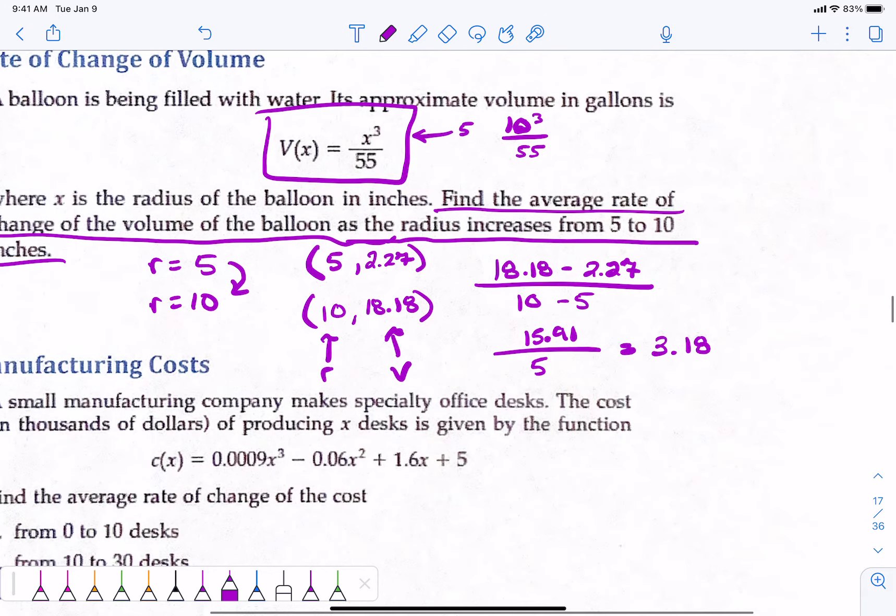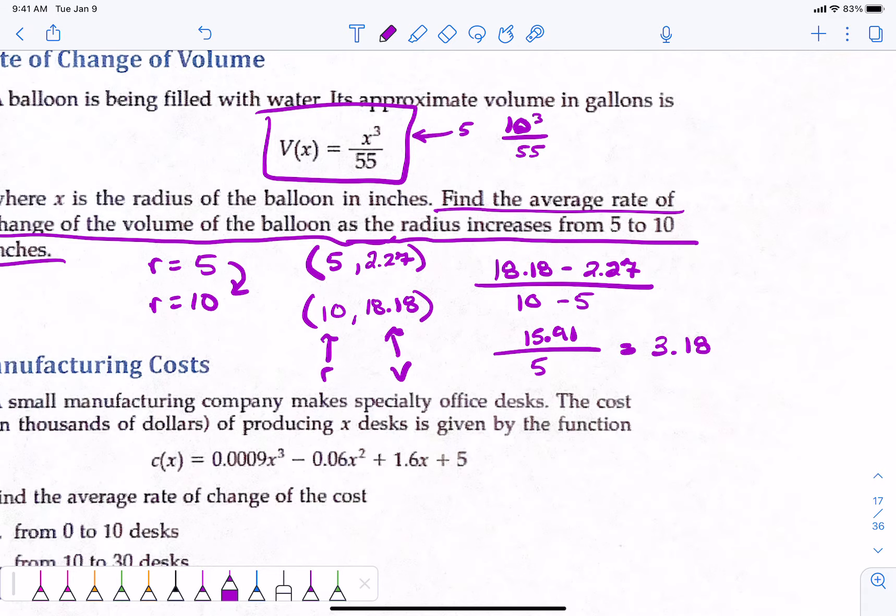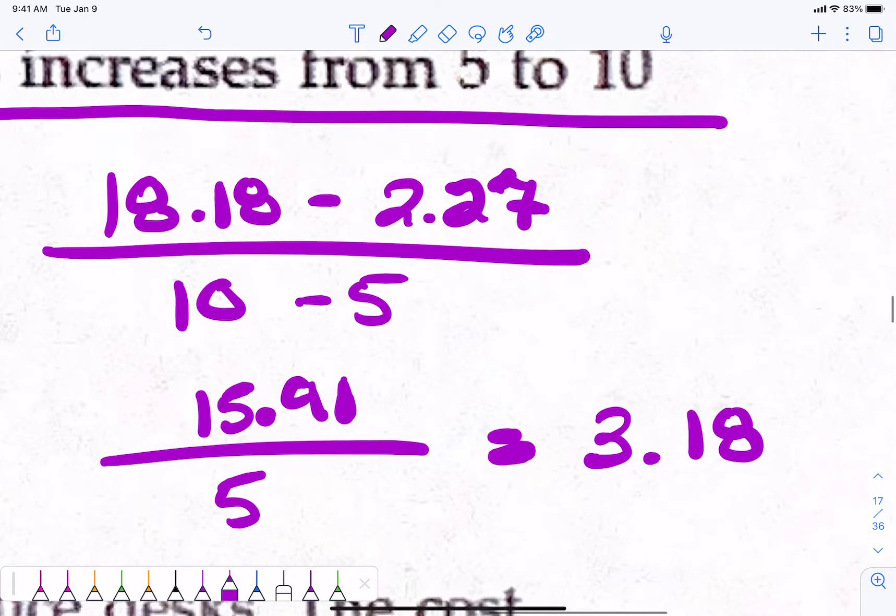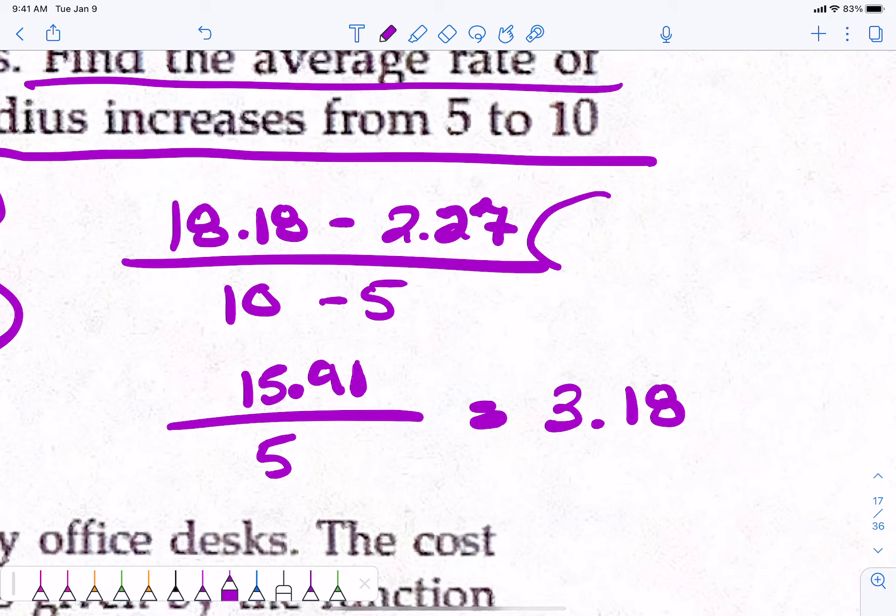5. You do the top number. 15.91 divided by 5 is 3.18. Let's figure out our units. What is the units of volume? And what's the units of radius? Volume is gallons. It says it is gallons. And the radius is measured in inches.